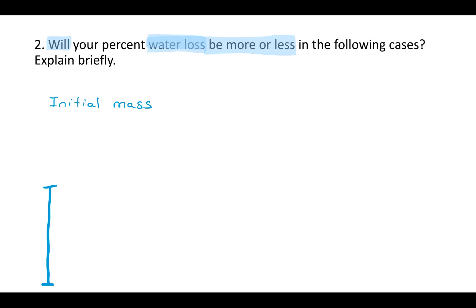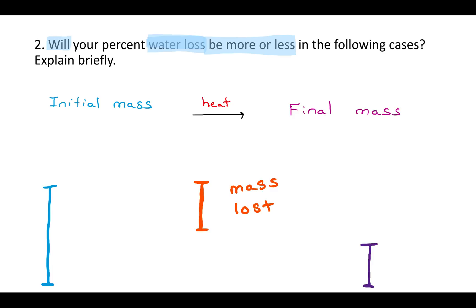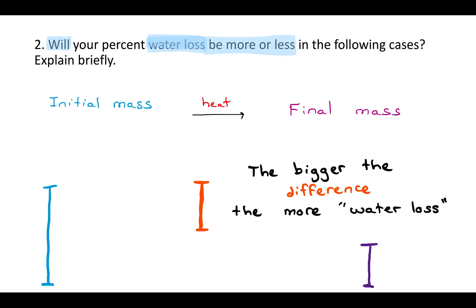We take an initial mass and assume that it is just our hydrate — that salt we got from underneath the fume hood. We heat that up in the crucible and whatever water was sticking to the salt evaporates away, so our final mass is less. The initial mass is salt plus the water that makes it a hydrate; we heat it up and the final mass is just the salt. The difference between them is what we take to be the water loss.